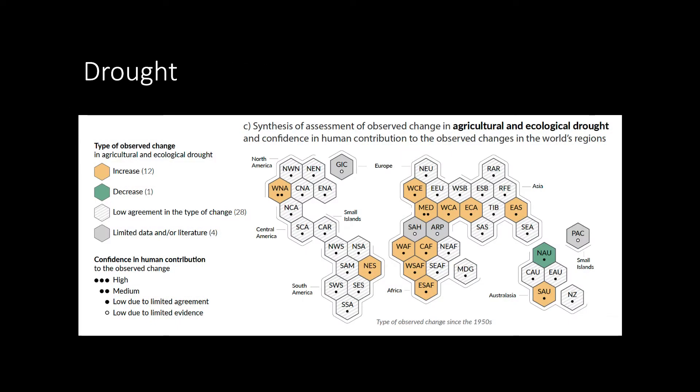This figure shows the assessment of observed change in agricultural and ecological droughts. This assessment is based on the observed and simulated changes in total column soil moisture. Currently, there is low agreement in the type of change that is happening in Southeast Asia.